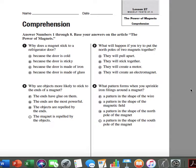Number 3. What will happen if you try to put the north poles of two magnets together? A. They will pull apart. B. They will stick together. C. They will create a motor. D. They will create an electromagnet.